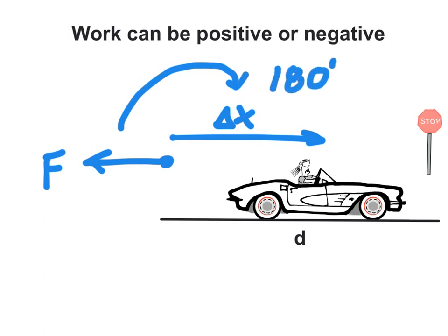In this case there's an angle of 180 degrees between force and displacement. And the cosine of 180 degrees is negative 1. So we have negative work. Which makes sense if you consider that we lose kinetic energy while stopping.